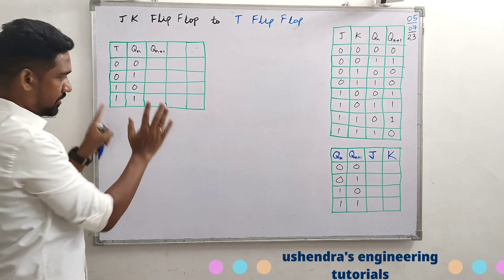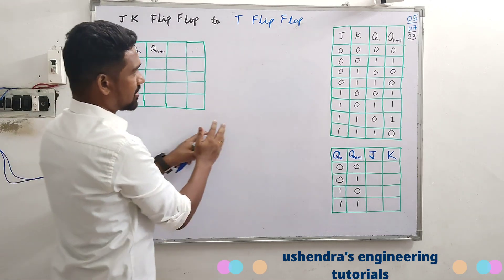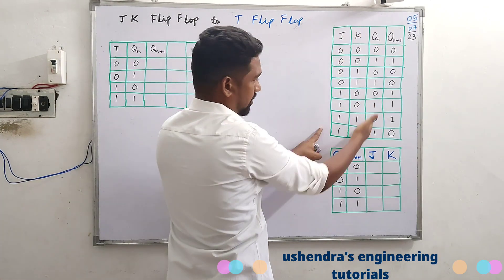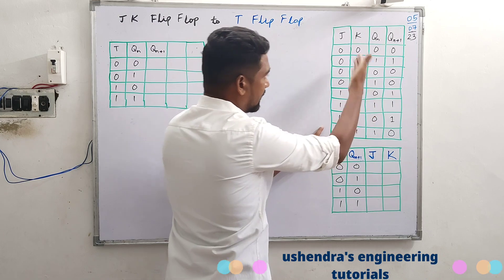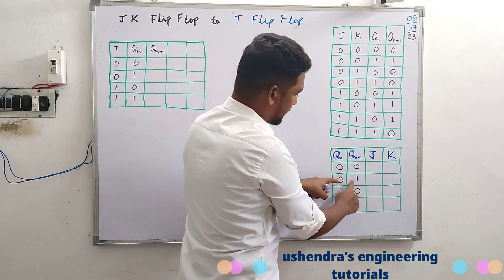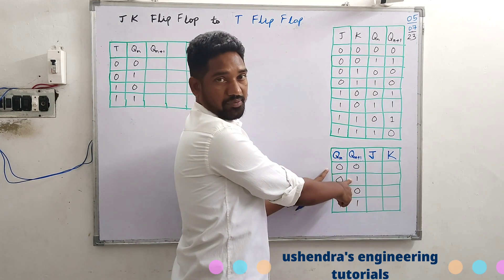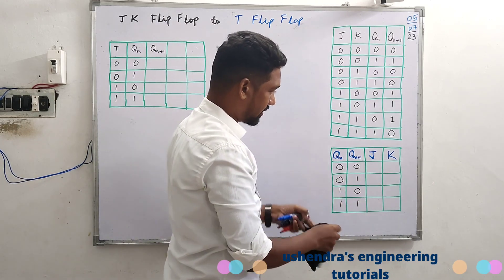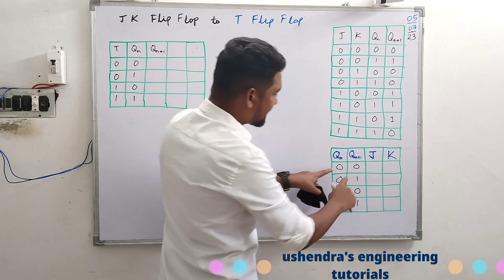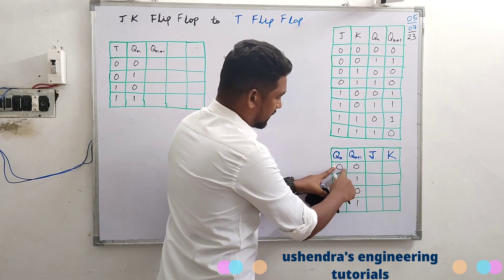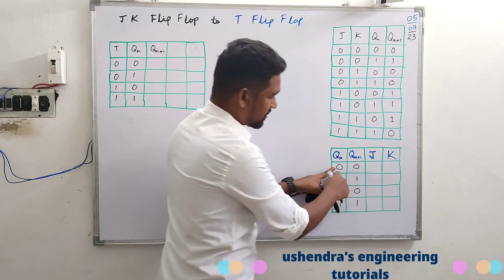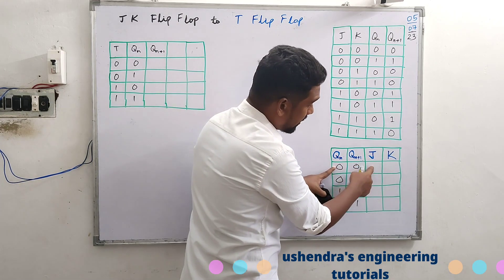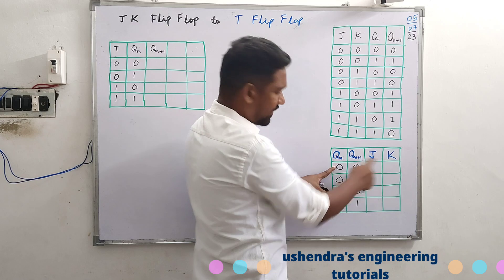Let's start — JK flip-flop is the given flip-flop. We need to construct an excitation table. Let me recall and explain the excitation table. In the excitation table, we have inputs: Q present state zero, next state zero — what J input and K input are needed? Those are the excitation outputs.